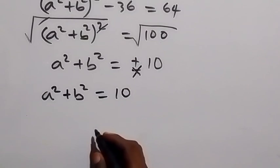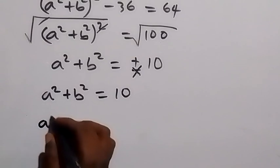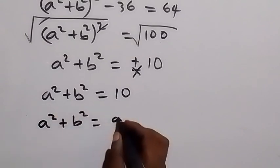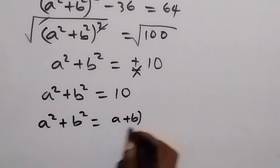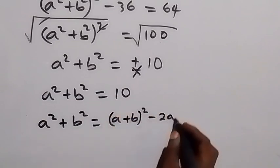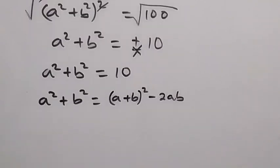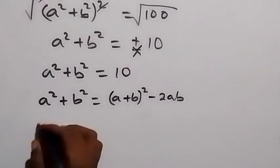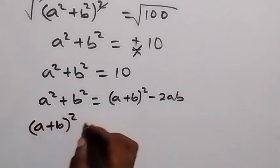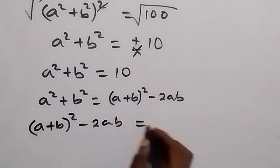From this identity, a plus b squared gives us a squared plus b squared equals a plus b squared minus 2ab. So when we replace a squared plus b squared as a plus b squared minus 2ab, this will be equal to 10.